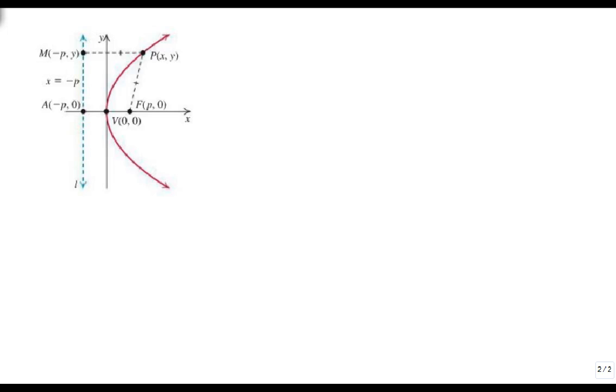So here's the visual representation we're talking about. Here's that f that we were talking about at p, 0. Here's our point x, y. Here's our vertex, and that works just the way that we're used to thinking of vertexes and parabolas—it's the tip where it turns around. Here's our line at minus p.